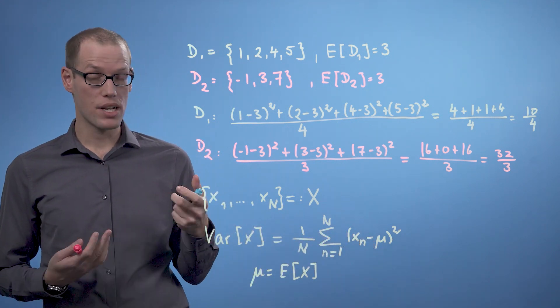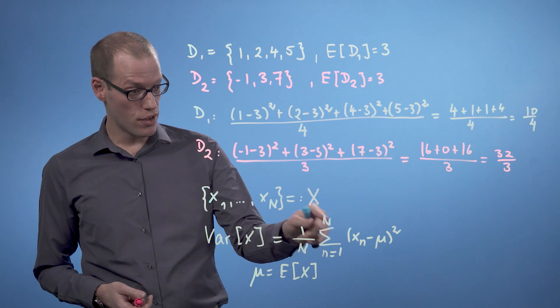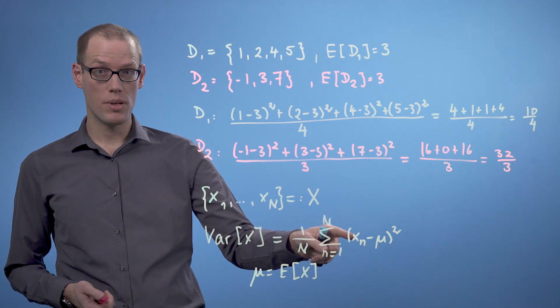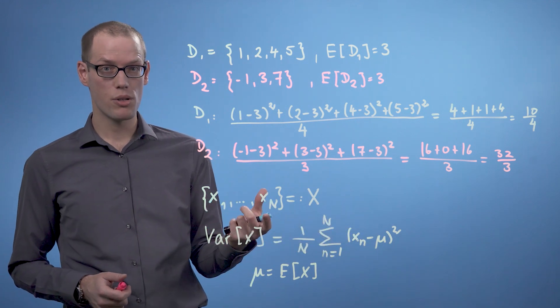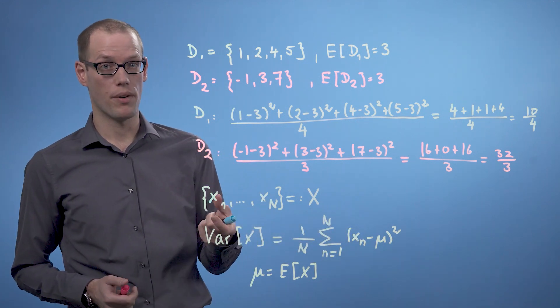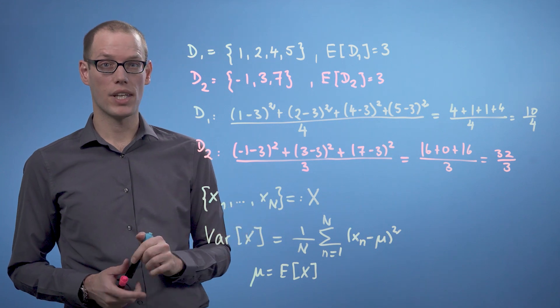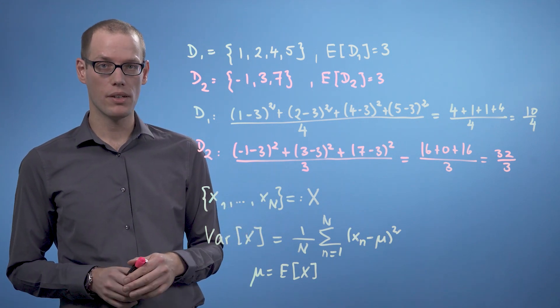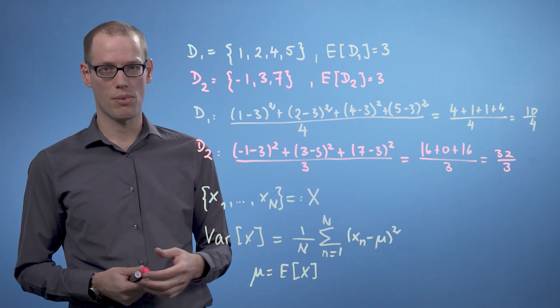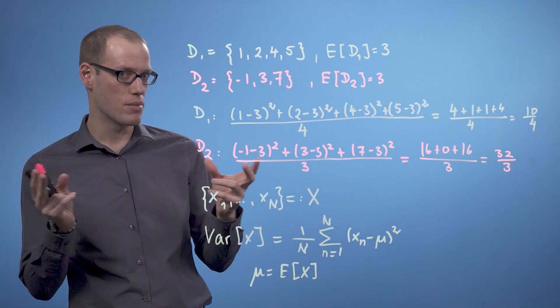And now we can also make some statements about this. First, the variance as defined here can never be negative, because we just sum up squared values. And that also means we can take the square root of the variance, and this is called the standard deviation. The standard deviation is expressed in the same units as the mean value, whereas the variance unfortunately is expressed in squared units, so comparing them is quite difficult.